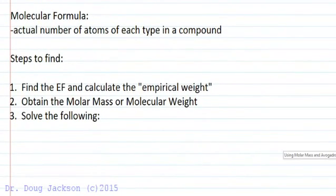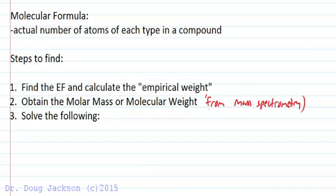What about finding the molecular formula? So the molecular formula is the actual number of atoms of each type in a compound. So to find the molecular formula, experimentally, we determine the percent by masses, calculate the empirical formula, and then we calculate the empirical weight from the empirical formula. We're going to obtain the molar mass or molecular weight, usually from a technique called mass spectrometry. So experimentally, we have to perform two experiments to get the molecular formula. So the molecular mass or molecular weight is obtained, and then we solve the following equations.